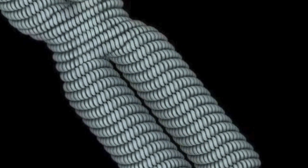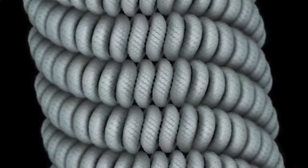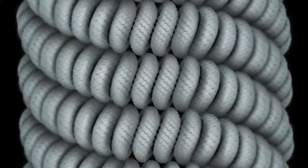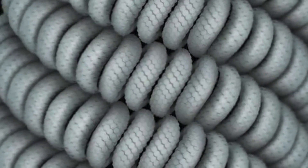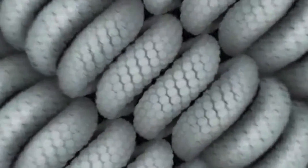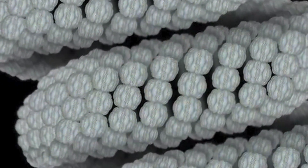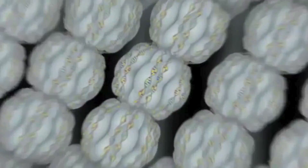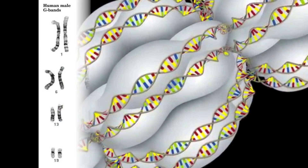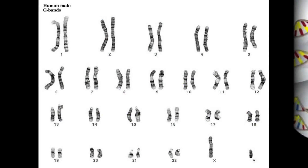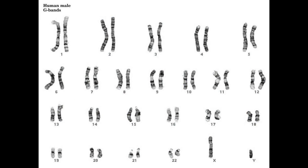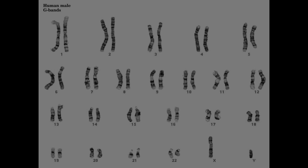DNA is found in the nucleus of eukaryotic cells. That means that almost all of your 100 trillion cells contains an entire set of DNA. In humans, one set of DNA contains 46 chromosomes. During mitosis, the chromosomes are copied and split between two daughter cells.